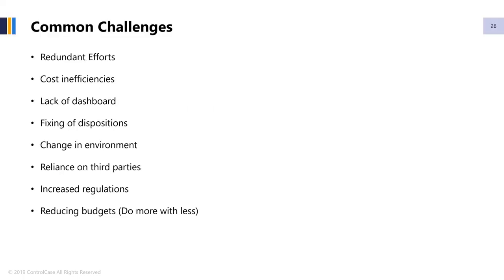Some of the common challenges we see include redundant efforts across regulations, decreasing budgets requiring you to do more with less, making sure that not only do you identify the issues but you're able to fix them in a timely manner — because a lot of times systems break when you apply patches. The regulations only keep on increasing while budgets keep on decreasing. Lack of dashboards are some of the common challenges you see across the enterprise when it comes to compliance to various regulations and doing it on a continuous basis.